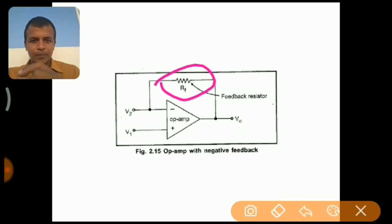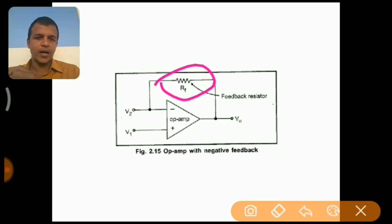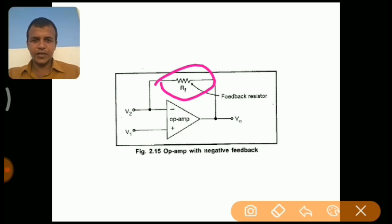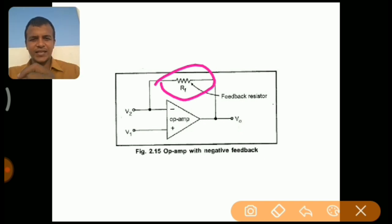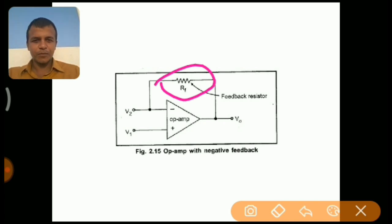I hope this video helped you in understanding the difference between closed loop configuration and open loop configuration, and why the operational amplifier is used in closed loop configuration and why there is a feedback path in closed loop configuration. Meet you again in another video. Subscribe to my channel Easy Lecture. Thank you.